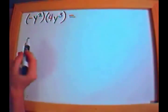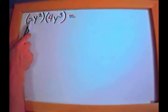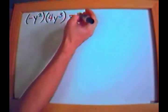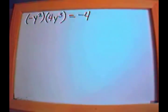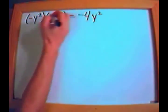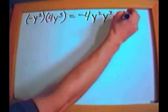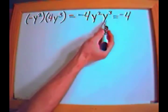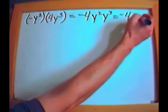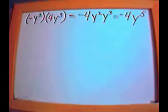What if you have negative y squared times 4y to the third? Work with the numbers first: there's a negative 1 in front of y squared, so negative 1 times 4 is negative 4. Then y squared times y to the third: same base, 2 plus 3 is 5, giving y to the fifth. The answer is negative 4y to the fifth.